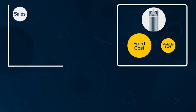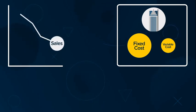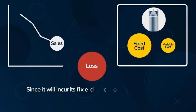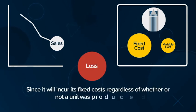If sales sharply decline, a company with more fixed costs than variable costs will incur greater losses since it will incur its fixed costs regardless of whether or not a unit was produced and sold.